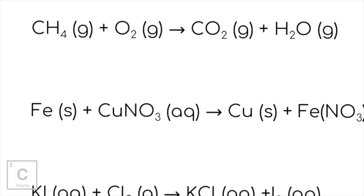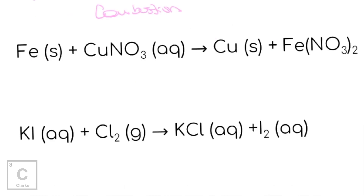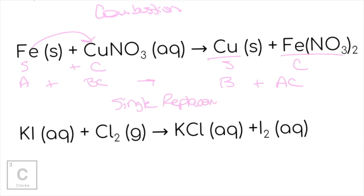Next example: people often think this is single replacement, but we have to notice this is a hydrocarbon. This is actually the exact combustion example I used earlier — a hydrocarbon and oxygen always yields carbon dioxide and water. Combustion. It's normally the hydrocarbon that gives it away. Next example: single element plus a compound, and on the other side a single element and a compound — A + BC → B + AC. One thing switched place. Iron came in and kicked copper out; iron got with nitrate. One move — single replacement.